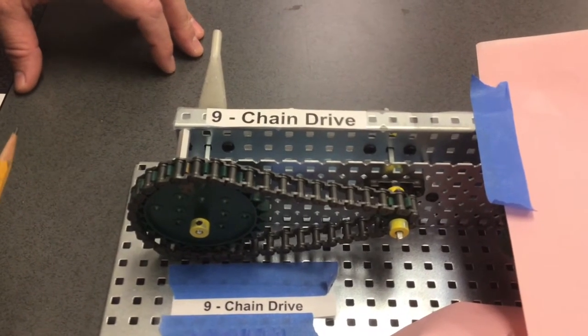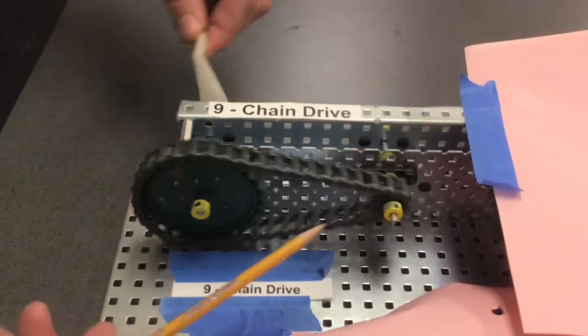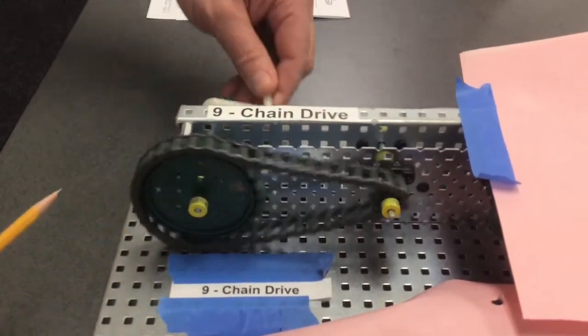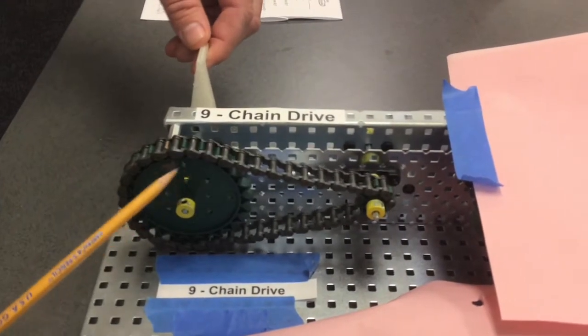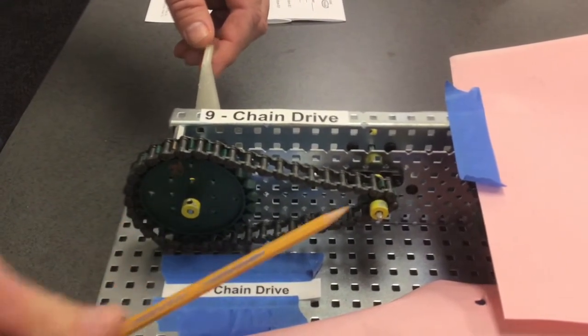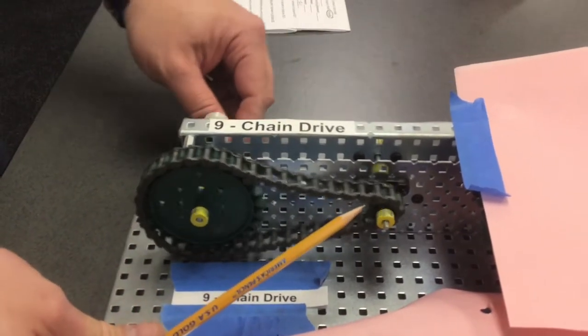For chain drive gear train B, watch the movement. Look how fast that moves. So by moving the input to a large and the output to small, we have increased the speed.